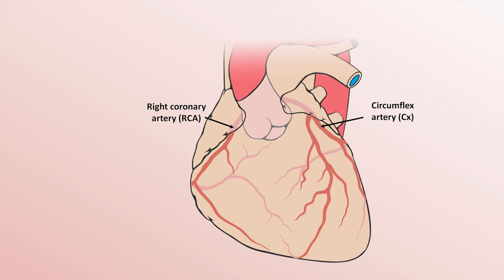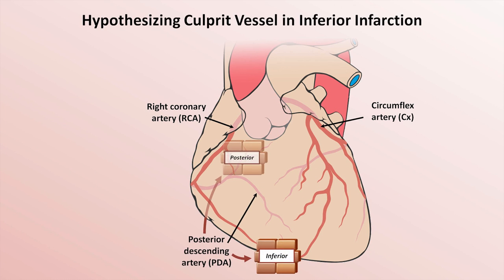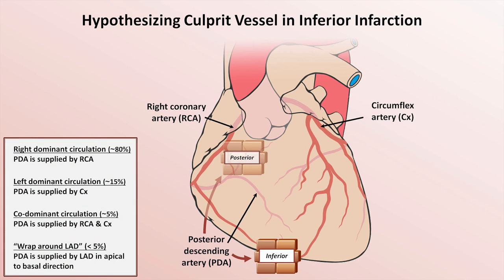The next special situation is how to hypothesize the culprit vessel in an inferior infarction — that is, when a patient is experiencing an inferior STEMI, is there any way to predict whether the patient has a left or right dominant circulation, and whether the obstructive vessel is the RCA or circumflex? In about 80% of people, the posterior descending artery and thus the inferior wall is supplied by the RCA; in 15% it's supplied by the circumflex, and in about 5% it's supplied by both.